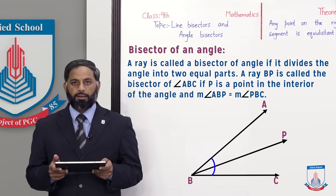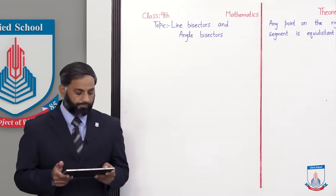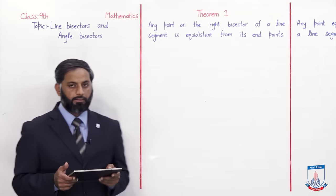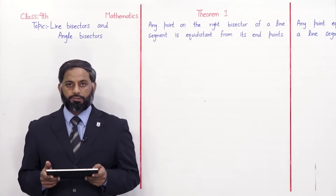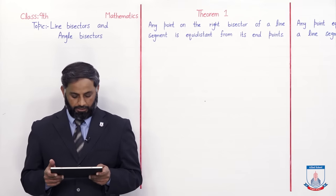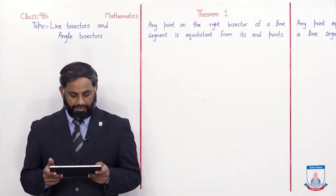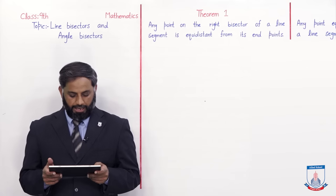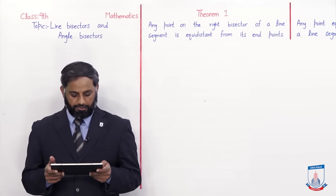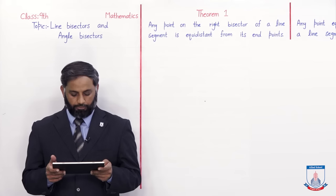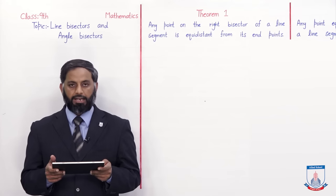Students, we have understood the definitions of right bisector of a line segment and bisector of an angle. Now we will start theorems. Theorem 1: Any point on the right bisector of a line segment is equidistant from its end points.